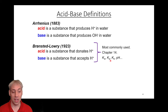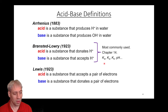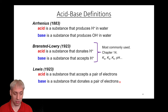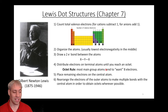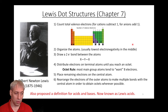Bronsted-Lowry is by far the most common definition people use when describing acid-base chemistry — things like pH are related to the H-plus concentration. But there's another definition by Lewis, which came out about the same time as Bronsted-Lowry and is the broadest definition. Lewis said an acid is a substance that accepts a pair of electrons, and a base is a substance that donates a pair of electrons. You may remember the name Lewis from Lewis dot structures — it is the exact same Gilbert Lewis, who also spent a lot of time thinking about electrons and proposed this electron-based definition of acid-base chemistry.